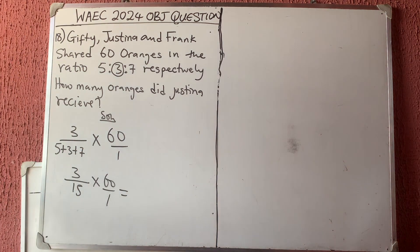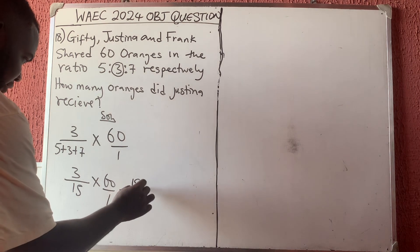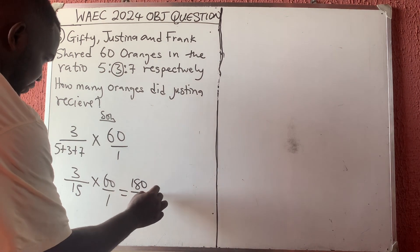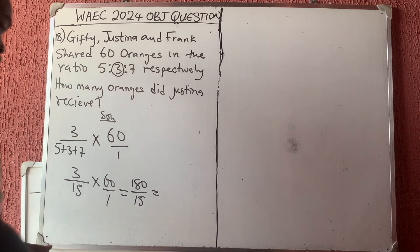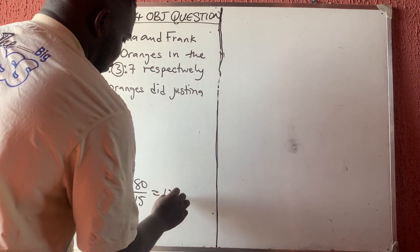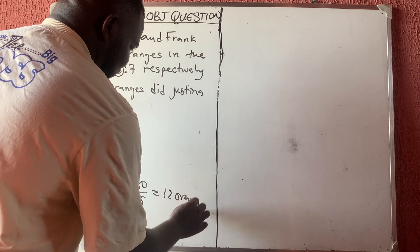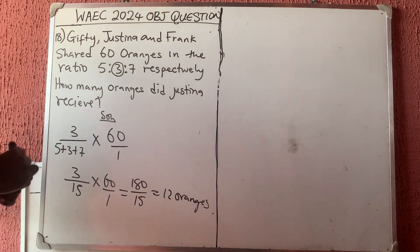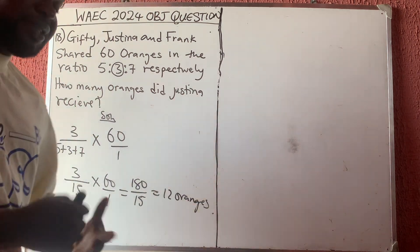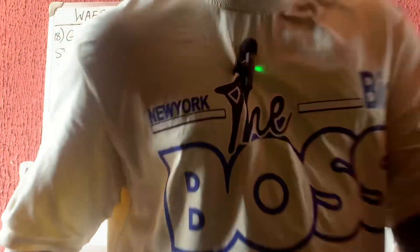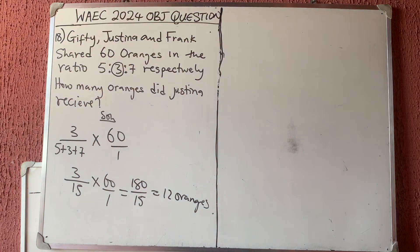Multiplying: 3 times 60 is 180, and 180 divided by 15 gives us 12. So Justina received 12 oranges. It's very simple to solve. Thank you very much and bye-bye — don't forget to comment and like the video.